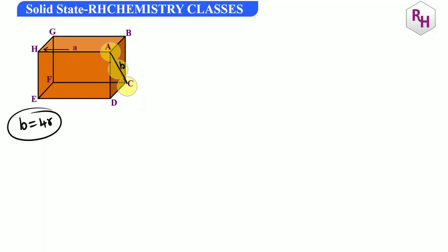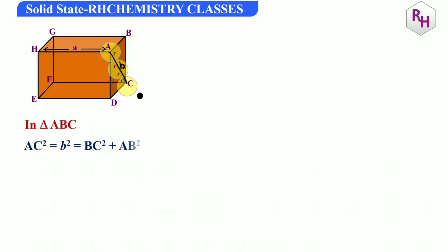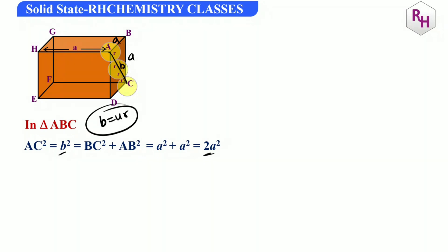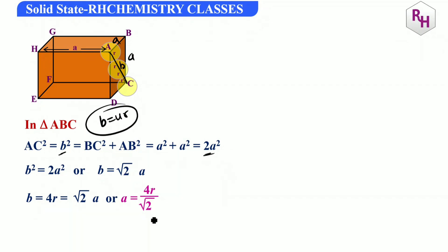Using Pythagoras formula for triangle ABC: AC² = AB² + BC². Since AB = A and BC = A, we get AC² = A² + A² = 2A². The face diagonal AC equals 4R, so 4R = √2·A.